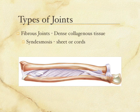In the fibrous joints — dense collagenous tissue — the first one is a syndesmosis. Syndesmosis is a fibrous joint where you have sheets or cords holding the two bones together. The picture here shows the two bones of your forearm. Just like your leg has two bones in it, your forearm does too, and the two bones are locked together with sheets and cords of connective tissue. This is the example of a syndesmosis.